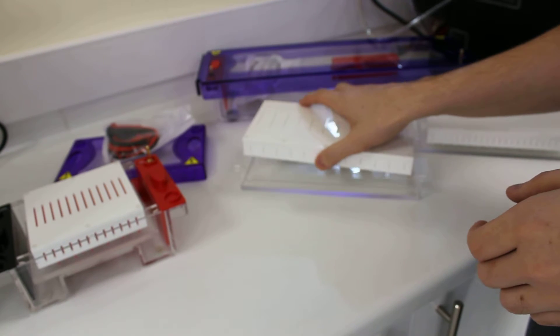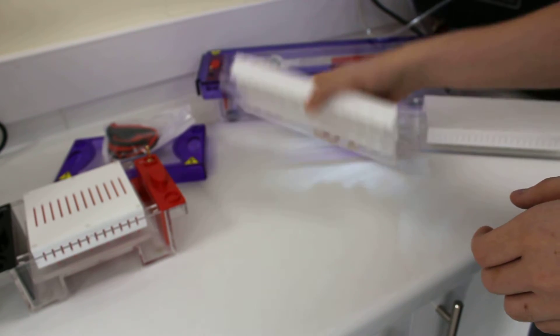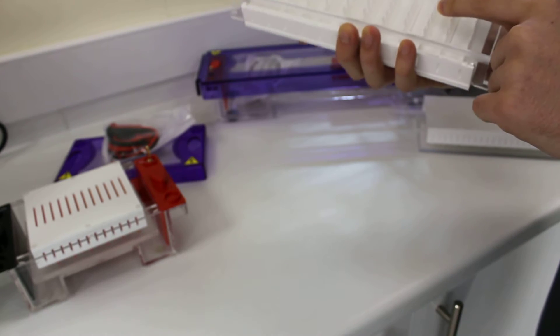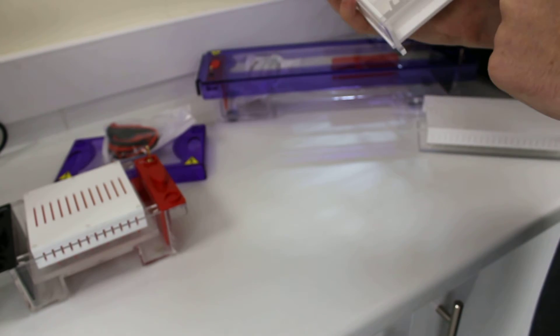And that is cast in the same way, just pour your agarose into there with the casting dams. And you get 96 sample wells, and again you can have one or two marker wells.